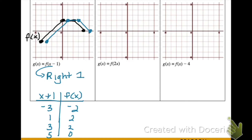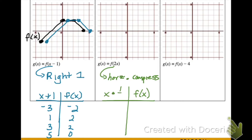In our next example, we have a two on the inside, which results in a horizontal compression — the graph is going to get thinner, squashed towards the y-axis. This only affects our x values. Remember, for a horizontal compression we always multiply by the reciprocal, so this halves all our x values. Instead of negative four we get negative two, zero stays the same, two becomes one, and four becomes two. Comparing the black graph to the green graph, you can see it is being compressed towards the y-axis, making it look skinnier.